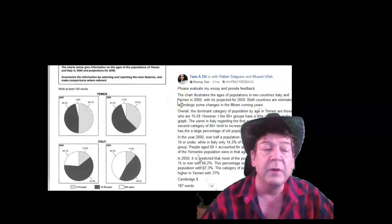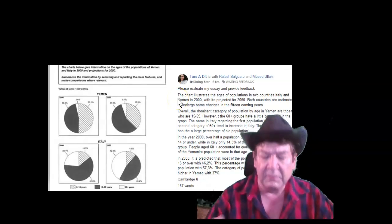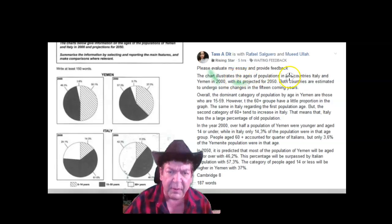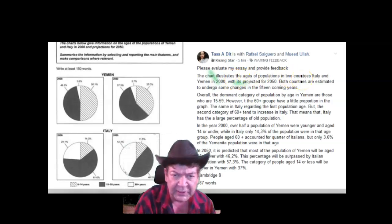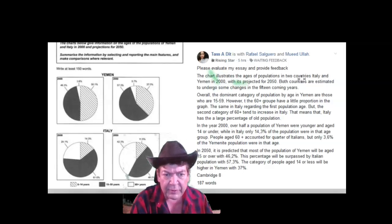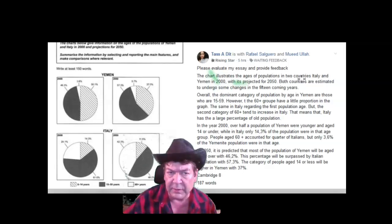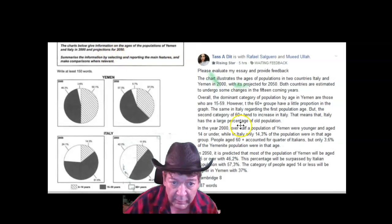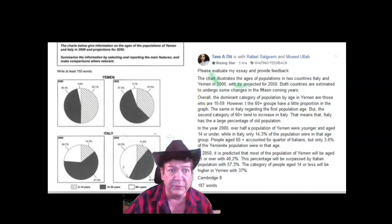I'm just going to give you my feedback live as I'm reading it. The charts, plural, illustrate the ages of populations in two countries, Italy and Yemen. Now there's a reason why the question puts it in a particular way. There's a reason why they choose to use the language that they do, because it's correct.